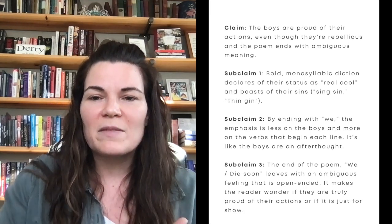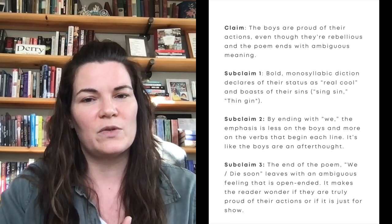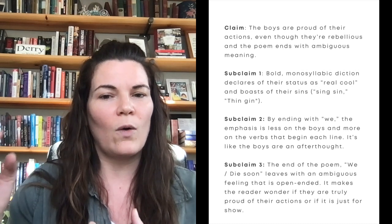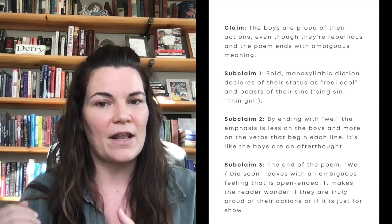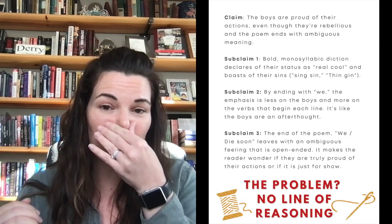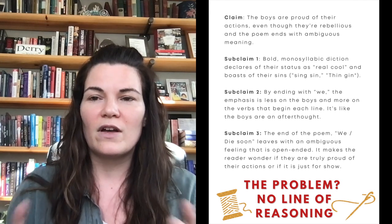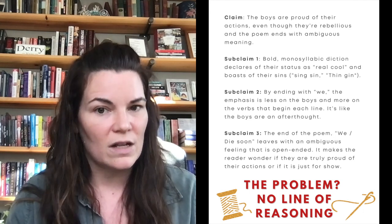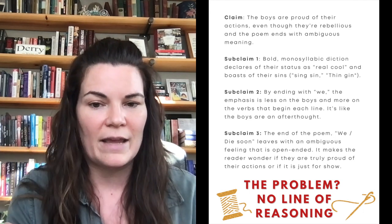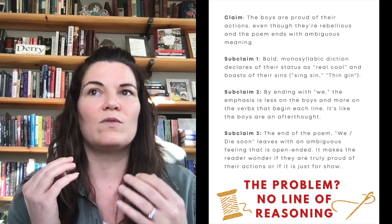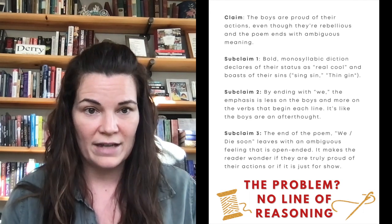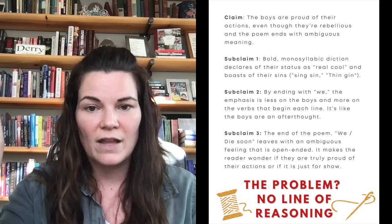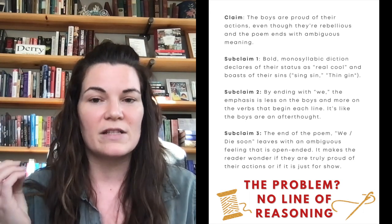If you go back to my claim, you can see that I do respond to it. But the problem is I don't really respond to it a whole lot until I get to that third subclaim. This is an example of an outline that's lacking a line of reasoning — I have nothing that really holds it all together. I'm dependent on that last claim to get to my point, and really strong essays shouldn't have that. They should have a line of reasoning that they keep referring to in the claim and in all the body paragraphs.